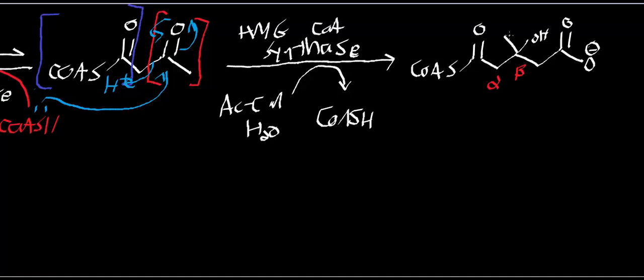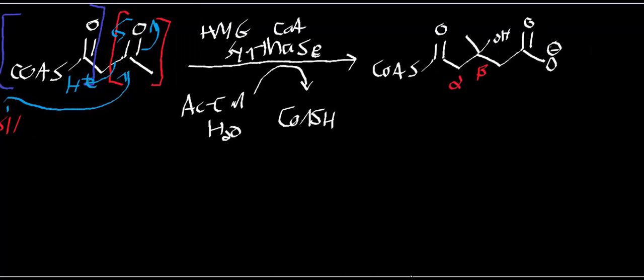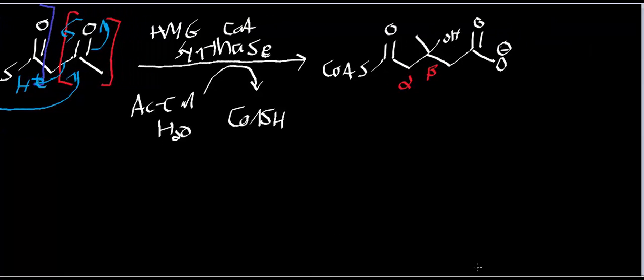HMG-CoA synthase is an enzyme you should know well because it's actually important in the biosynthesis of cholesterol — specifically the isoprene units that constitute cholesterol. Those isoprene units can go on to form things like ubiquinone, which we've seen in the electron transport chain. HMG-CoA synthase is actually the committed rate-limiting step in cholesterol biosynthesis.